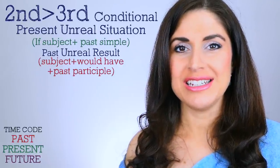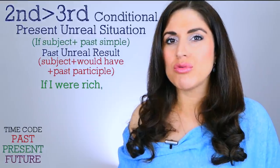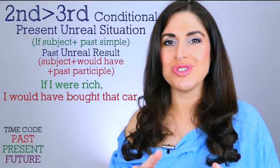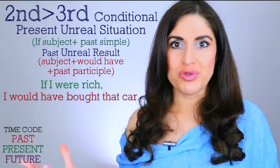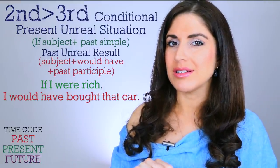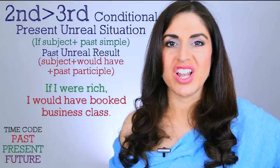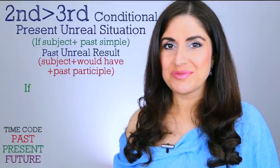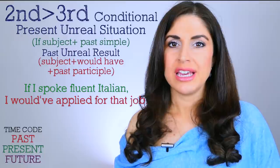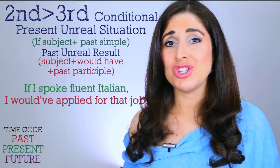Now let's start with the present unreal situation with a past result. If I were rich — that's the present situation, it's unreal, I'm not rich — what would I have done in the past? 'If I were rich, I would have bought that car.' 'If I were rich, I would have booked business class when I was flying.' Similarly: 'If I spoke fluent Italian, I would have applied for that job' — I'd have applied in the past, but speaking fluent Italian isn't my present situation.